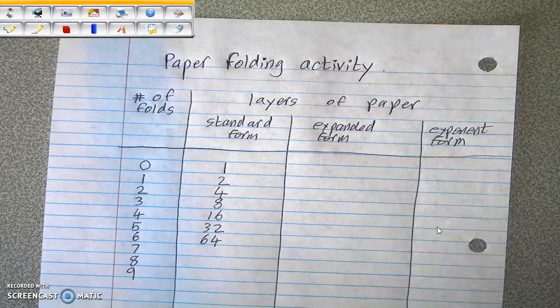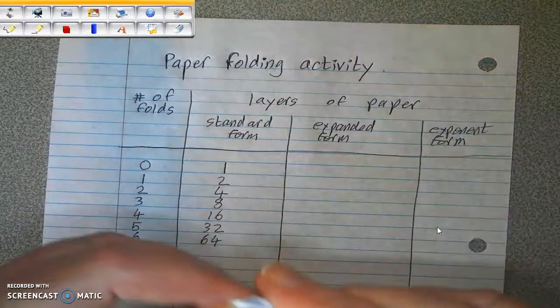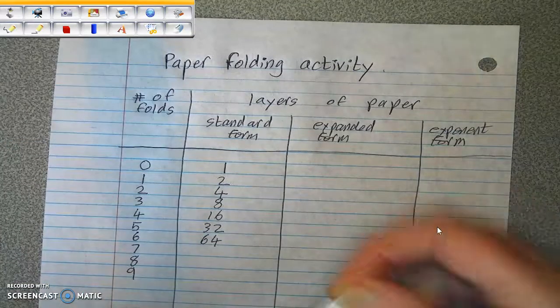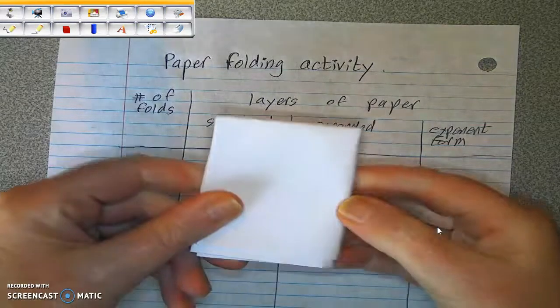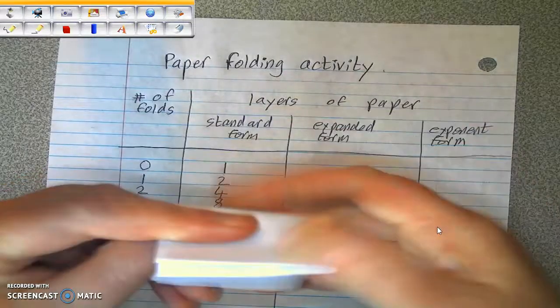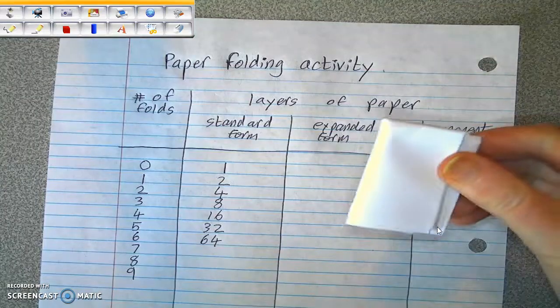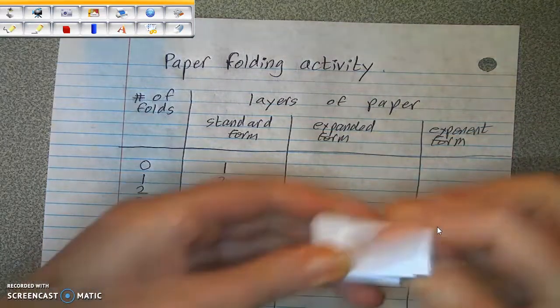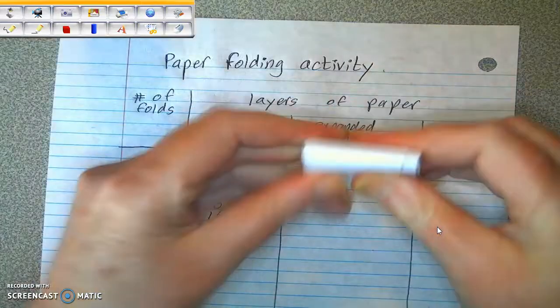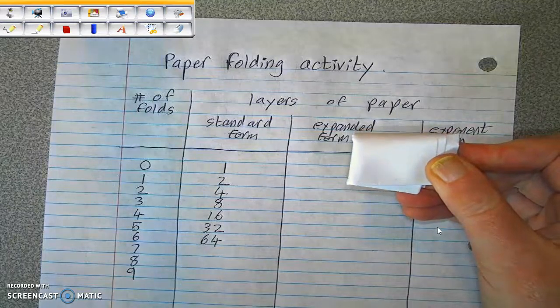Let's see if I can make those folds. So this is my third fold, and I have eight layers. Fourth fold, I have 16 layers. Fifth fold, I have 32 layers of paper. Six fold? I think that's probably about as far as I can go. I've got 64 layers of paper.